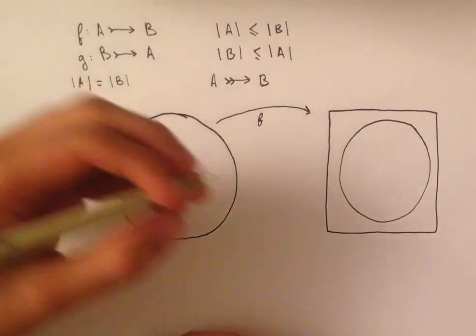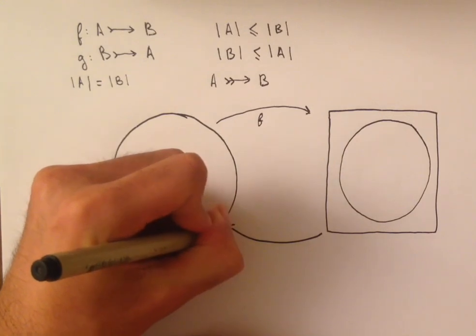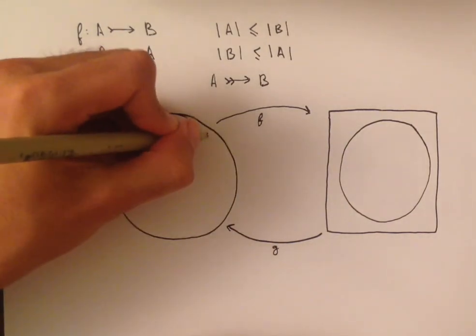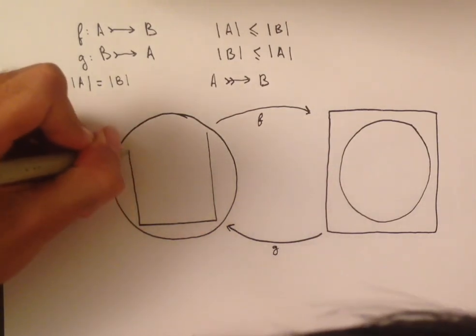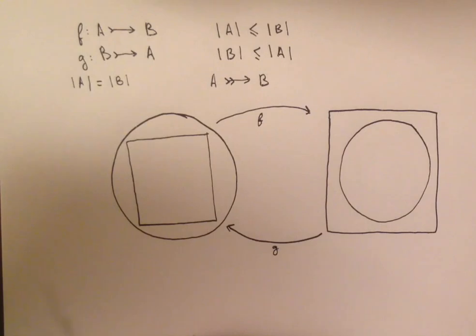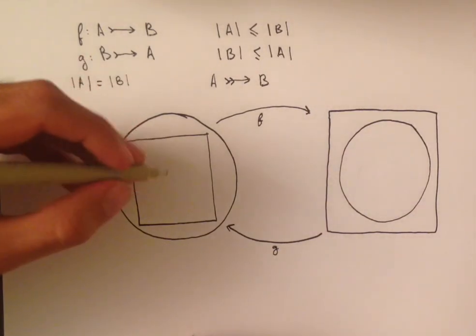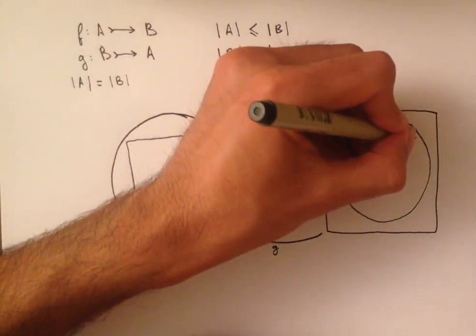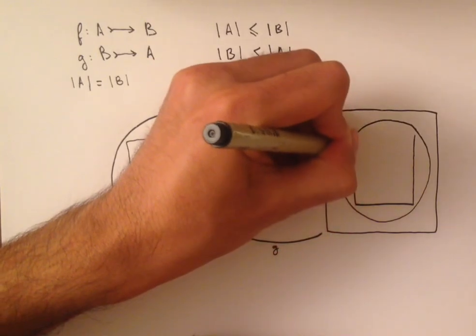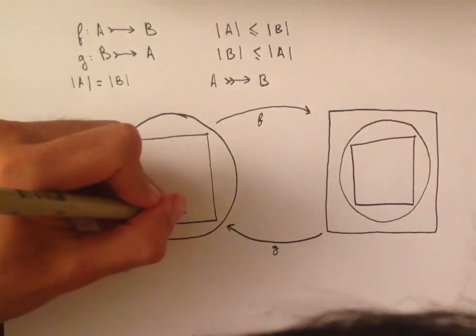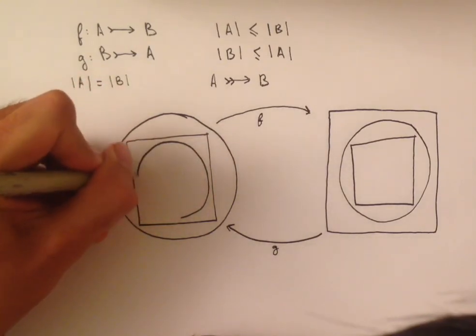And so we can do the same with the square. And we're going to take G of the square, and we're going to get a smaller square that is inside the circle. And now we can do this again. We can take F of the square this time, and it's going to give us a smaller square inside the circle. And the same with G, giving us a smaller circle inside the square.